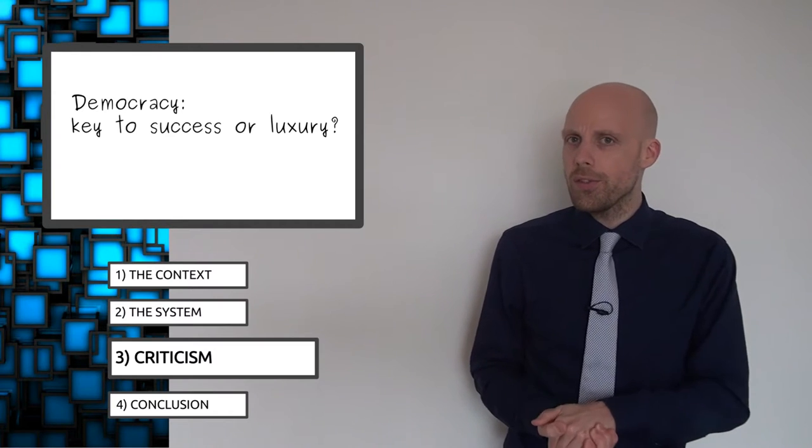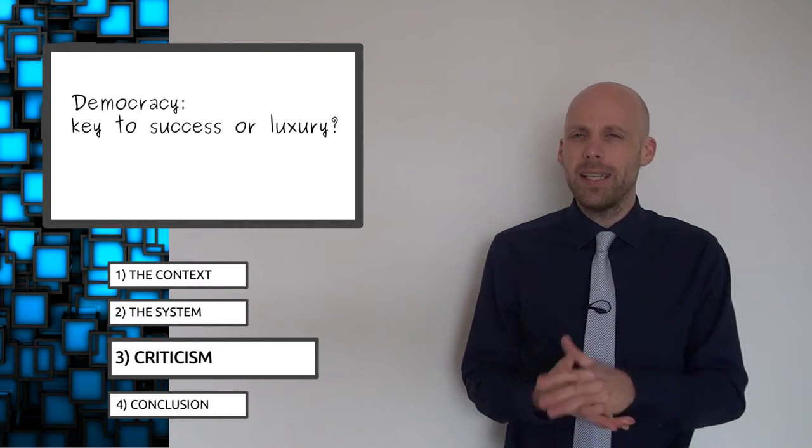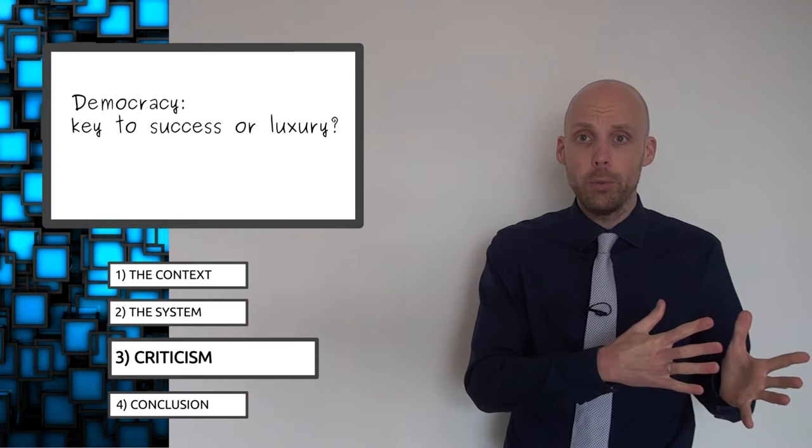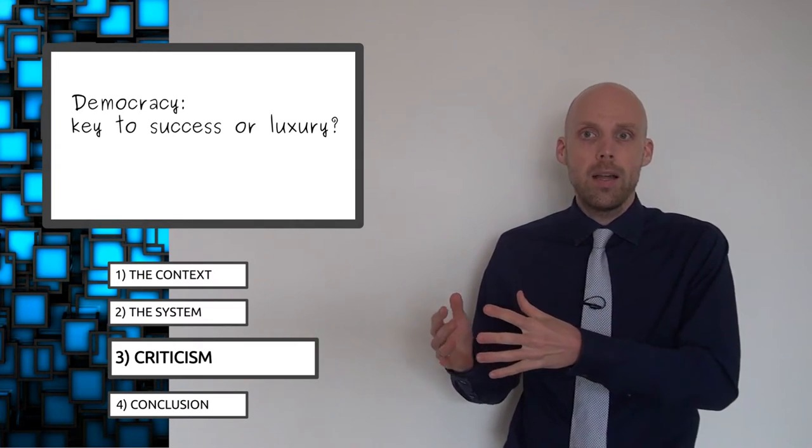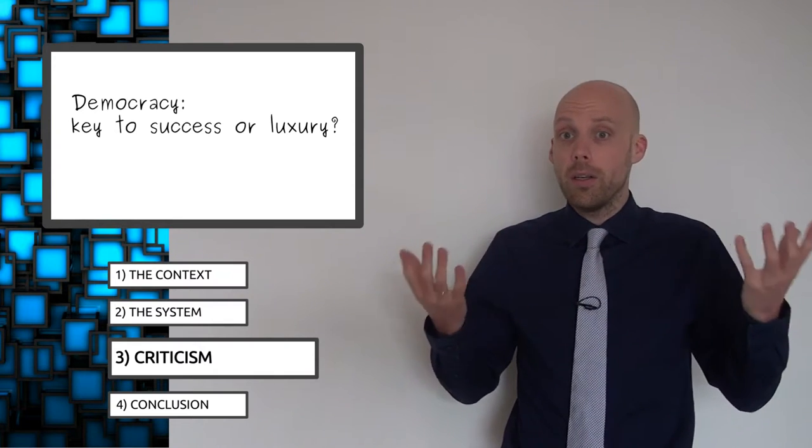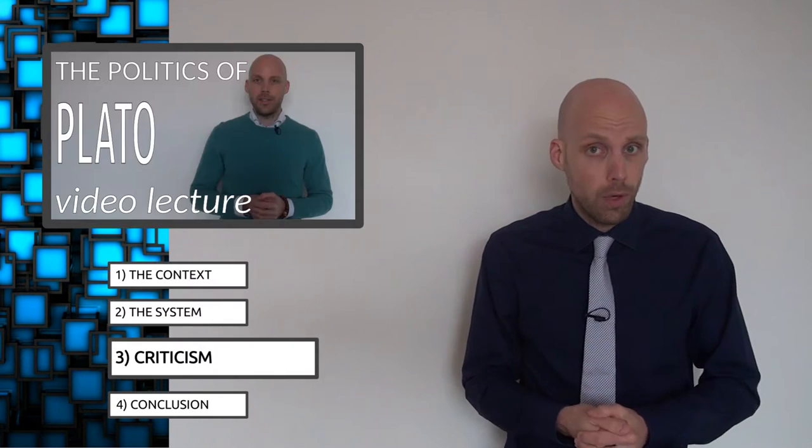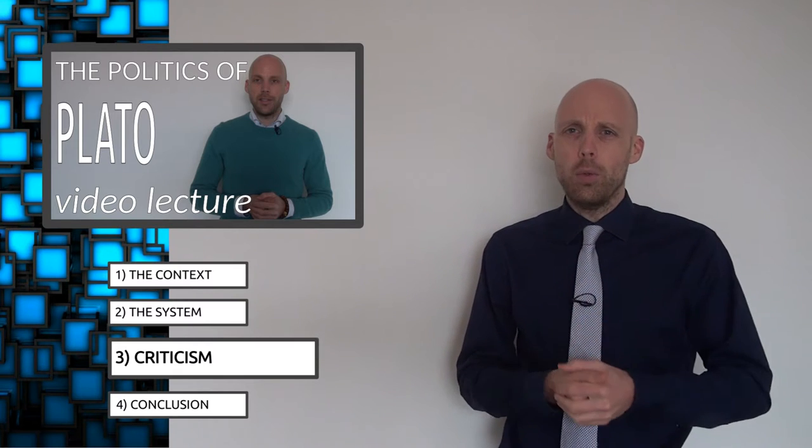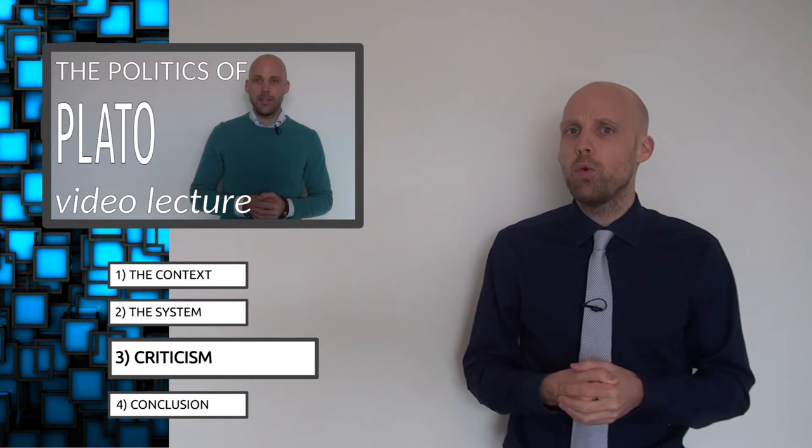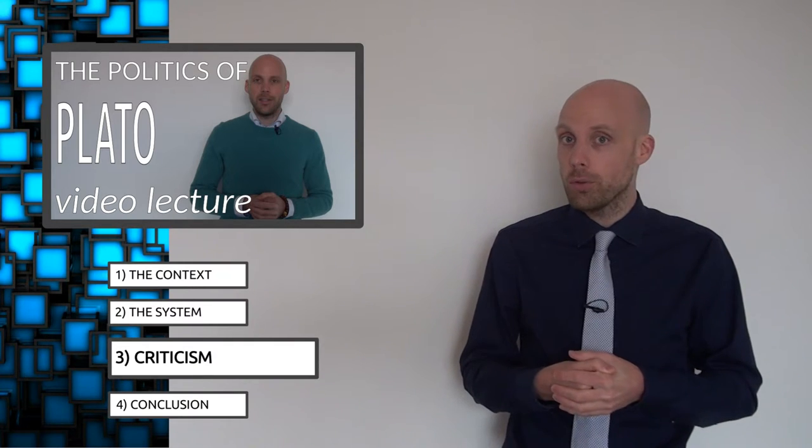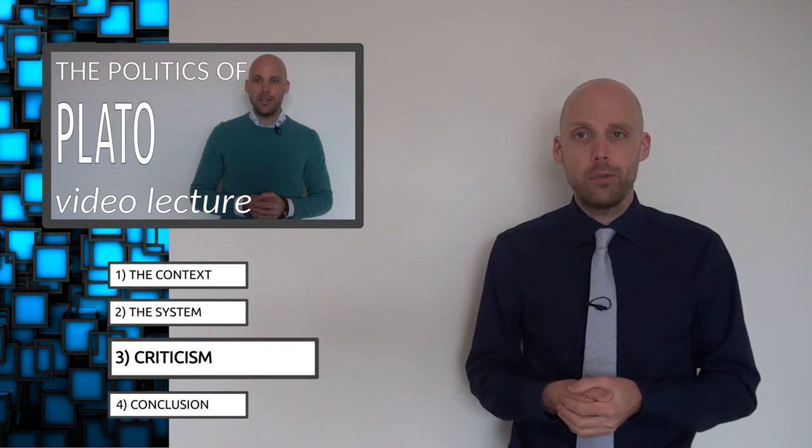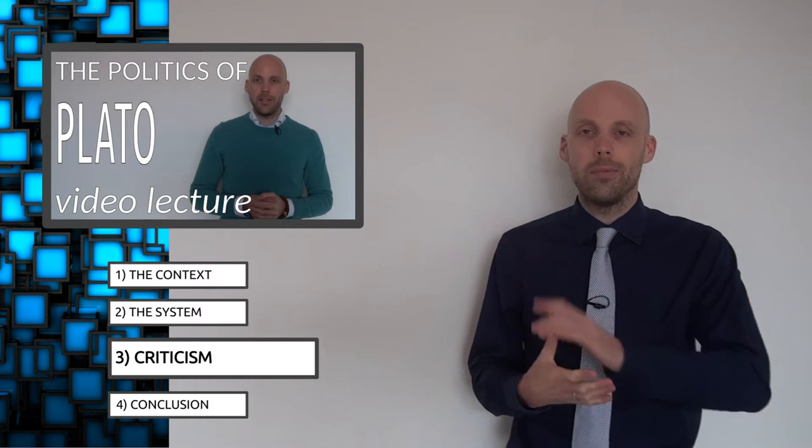So the success of ancient Athenian democracy is open to debate. Some argue it gave Athens its golden age, while others argue that it was the golden age and its empire that allowed Athens to indulge in the luxury of a chaotic form of government. Certainly Plato was unimpressed by the notion of popular rule, but then of course he had witnessed the popular court sentence his beloved mentor Socrates to death. For more on Plato's criticism of democracy have a look at this video.